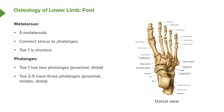There are five metatarsals running forward to connect to the phalanges of the digits. Toe one has the shortest but broadest metatarsal, made up of a base, shaft, and head. Metatarsals two through five are much thinner but also have a base, shaft, and head. Digit one has two phalanges — proximal and distal — while digits two, three, four, and five have proximal, middle, and distal phalanges.